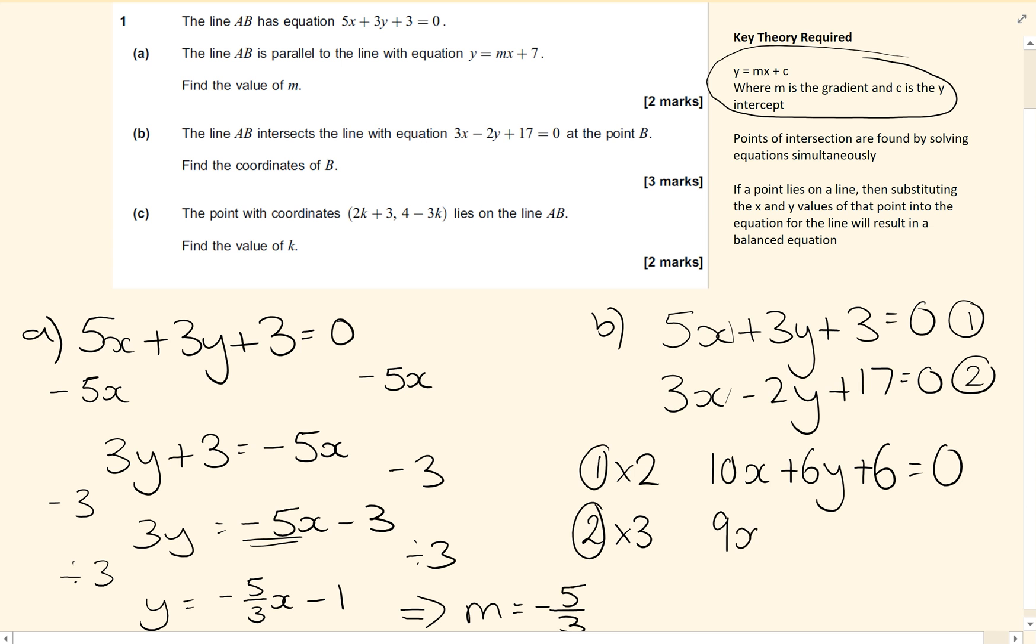So I've got 9x minus 6y, and then 3 times 17. And this caused some students some issues as well, but if you need to, you can go away and have a look at what the best ways to do this would be. I would do 3 times 10 plus 3 times 7. So 21 plus 30 is 51, and that still equals 0.